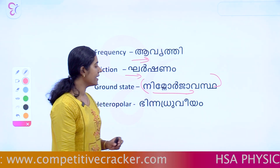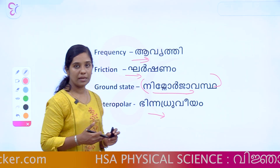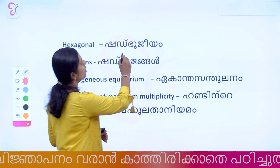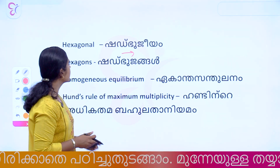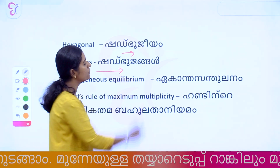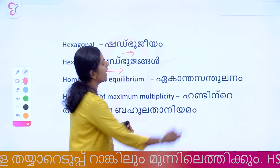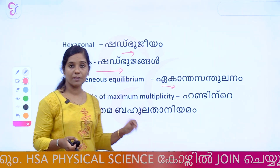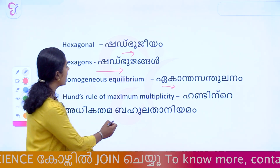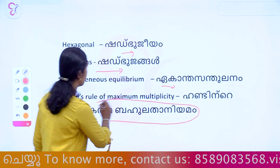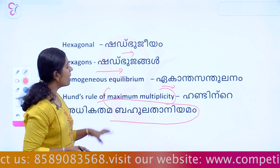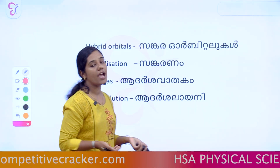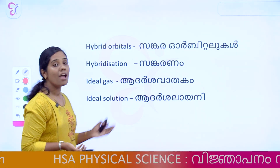Next is Heteropolar, then Hexagonal, then Homogeneous Equilibrium. Next is Hund's Rule of Maximum Multiplicity, which is called Maximum Multiplicity in Malayalam. Then Hybrid Orbital and Hybridization.